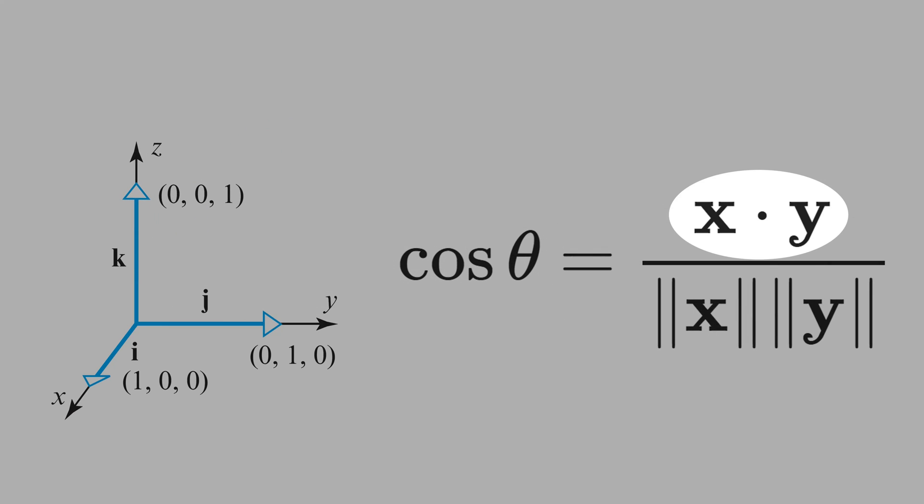If you plug the value of 0 in this dot product here, it doesn't matter the value of the norm. We know that this division will be 0. But if you want to calculate the norm of i, just square each component, sum up and take the square root, and you'll see that it will be 1.